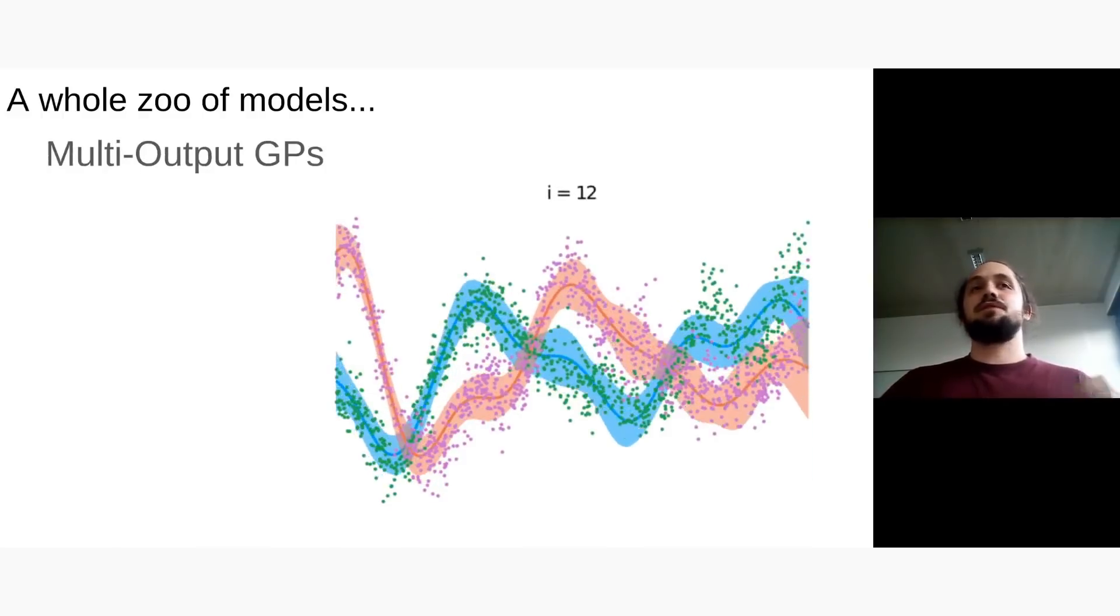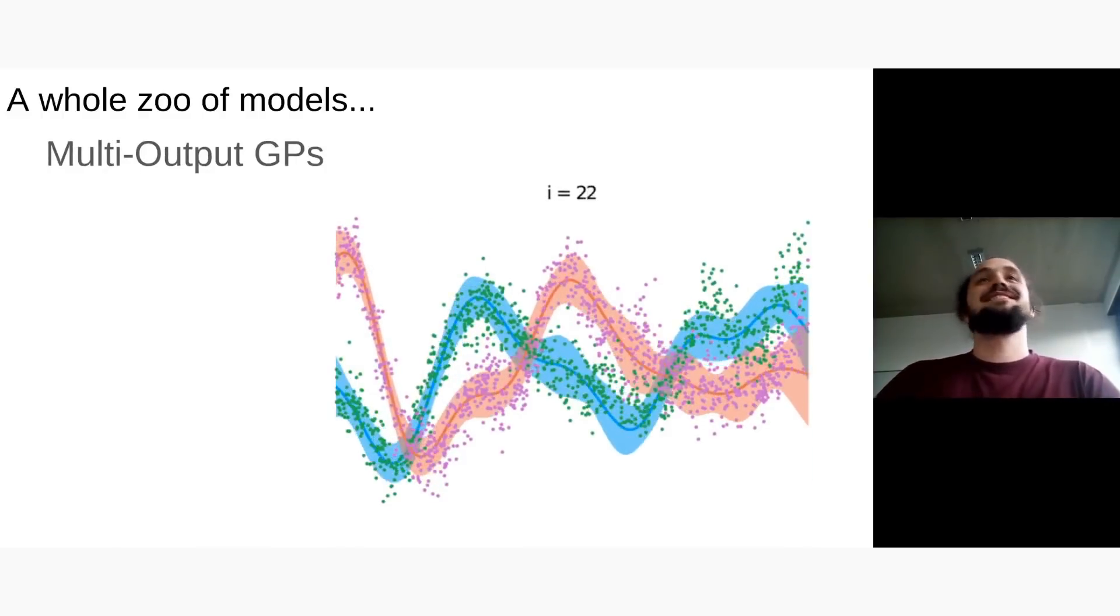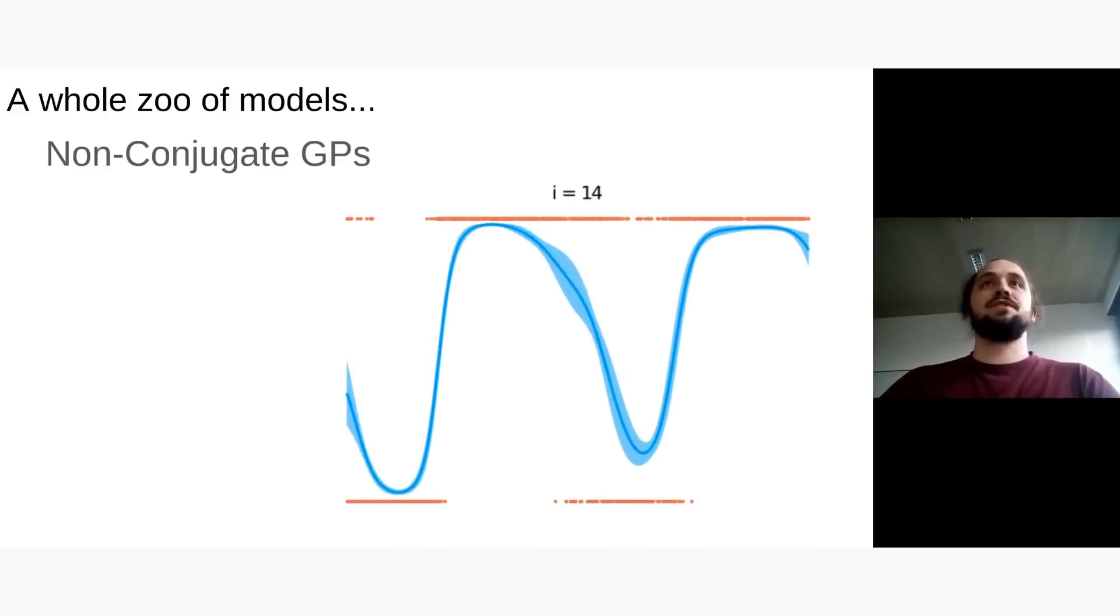Multi-output GPs if you have multiple outputs. And what I mentioned before, non-conjugate GPs are for, for example, for classification.